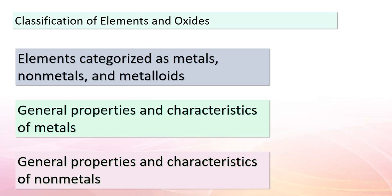In our journey through chemistry, we're now stepping into the realm of element classification and oxides. Elements exhibit diverse properties that help us categorize them into three main groups: metals, non-metals, and metalloids. Metals display traits like conductivity, malleability, and luster. Non-metals possess distinct characteristics — often showing lower conductivity, brittleness, and diverse physical states. The periodic table aids us in visualizing this classification.